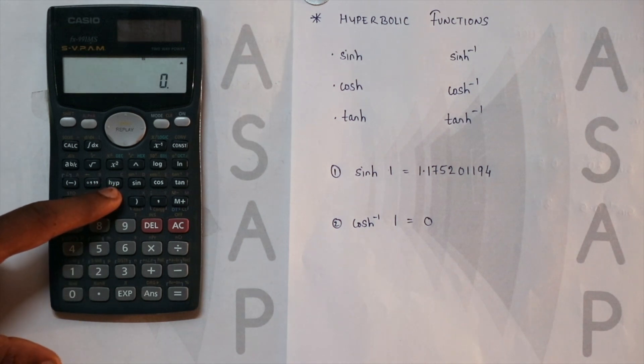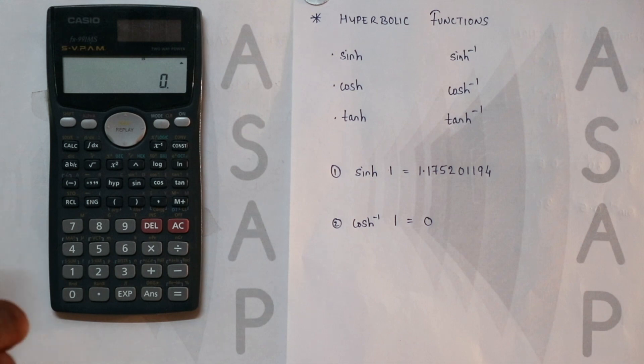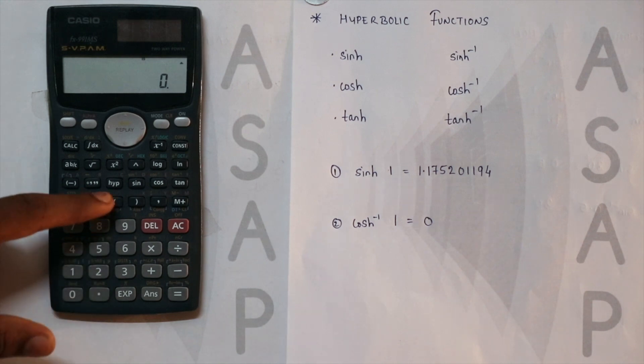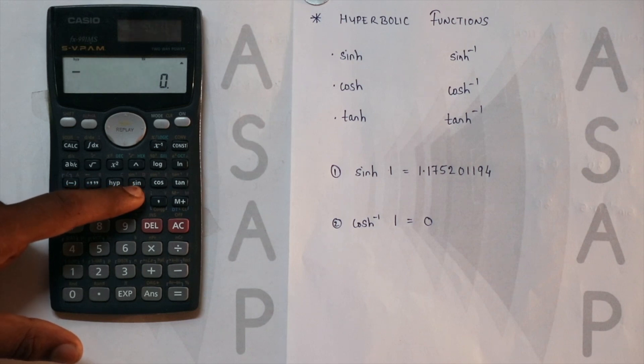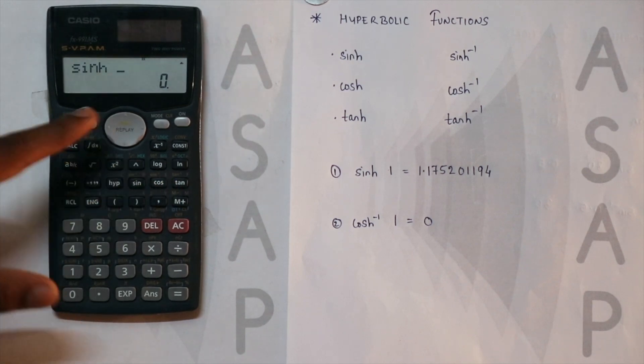Here you can see 'hyp' is written on this button - that is hyperbolic. The only thing you need to do is press this button and then whichever value you want, like for example, hyperbolic sine, cos, or tan.